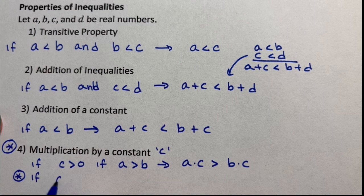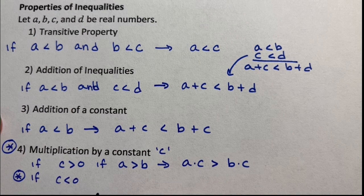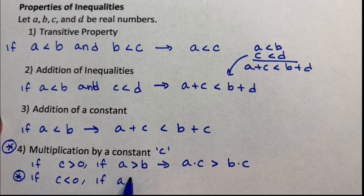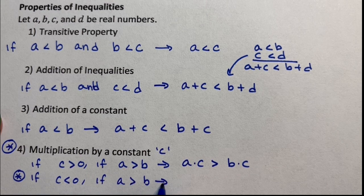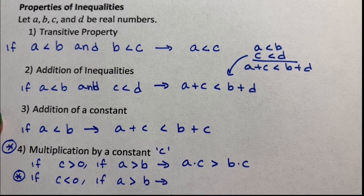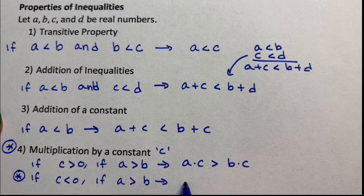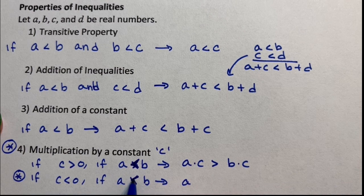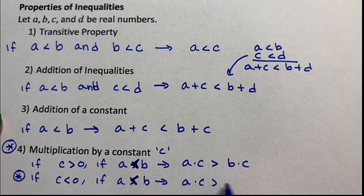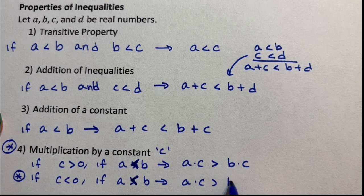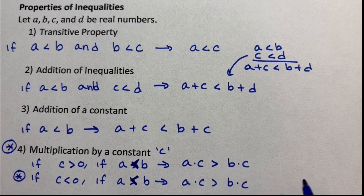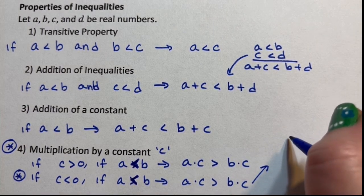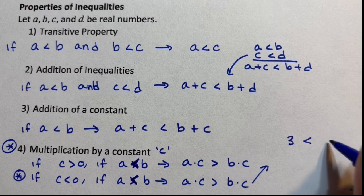But here is the big thing that makes it different. If C is less than 0, if A is greater than B, then, I don't know why I suddenly switched from greater than to less than. Then this should be less than. I'm sorry for that. Then A times C is greater than B times C. Let me show you an example of this.